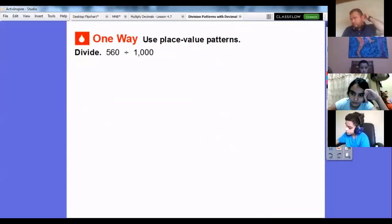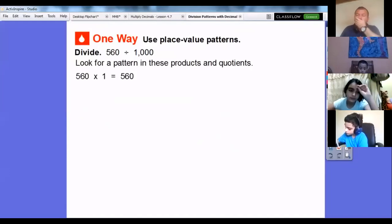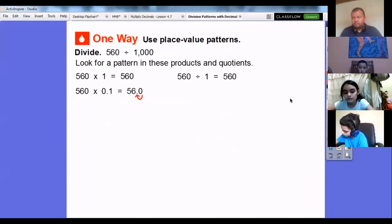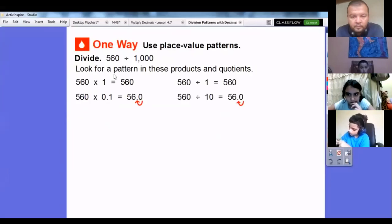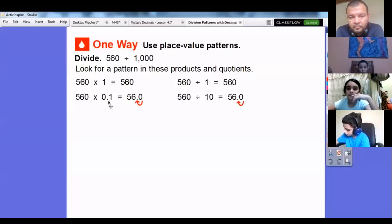So 560 divided by 1,000. Let's see if we can see a pattern in the products and quotients. 560 times 1 is 560, and 560 divided by 1 is 560. Anything multiplied or divided by 1 is that number. 560 times 0.1 moves that decimal over one place, so it becomes 56.0. We'll get the same thing when we divide by 10. Dividing by 10 moves the decimal over one place also, so it's 56.0.